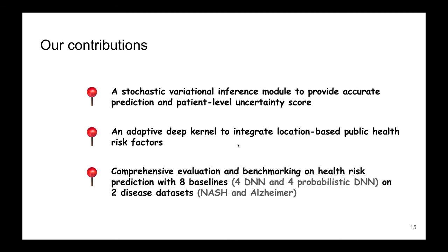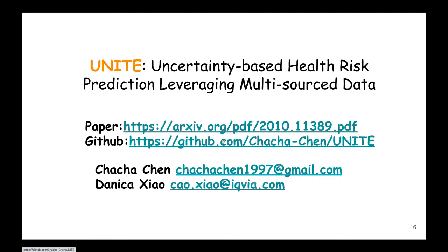We have now come to the end of the presentation, and here we summarize our three main contributions. First, a stochastic variational inference module to provide accurate prediction and patient-level uncertainty scores. Second, an adaptive deep kernel to integrate location-based public health risk factors. Third, a comprehensive evaluation and benchmarking on health risk prediction with eight baselines — four deep learning neural networks and four probabilistic deep learning networks — on two disease datasets, NASH and Alzheimer's. The links to our full paper and the GitHub code repository are in the slides. If you have any comments, questions, or suggestions, please don't hesitate to reach me or Danny Cassel by email. Thank you so much for listening.